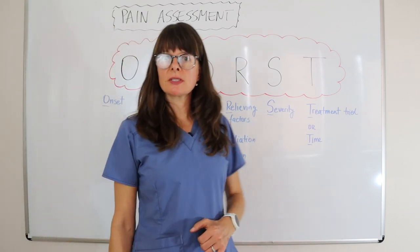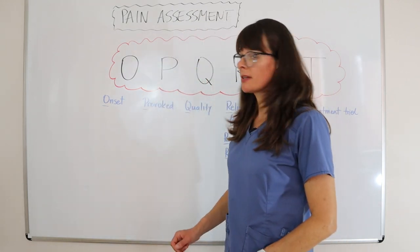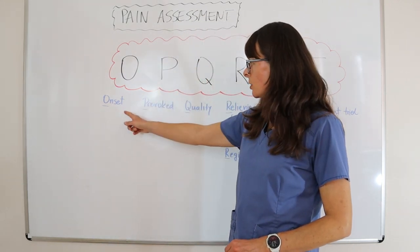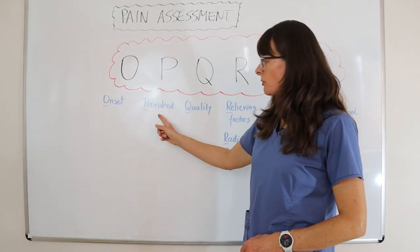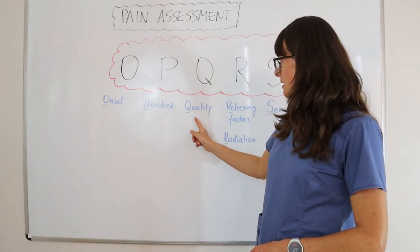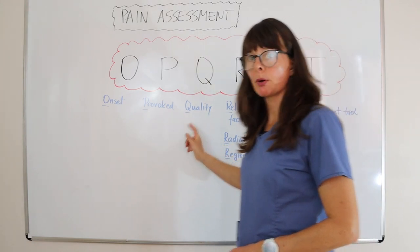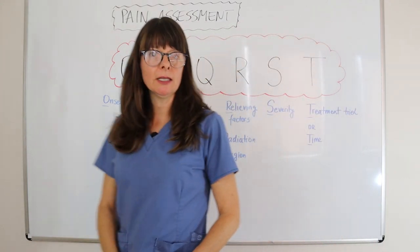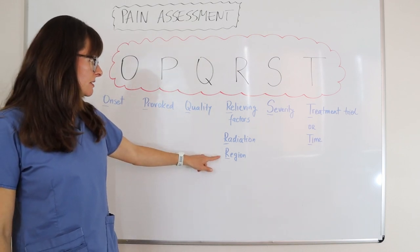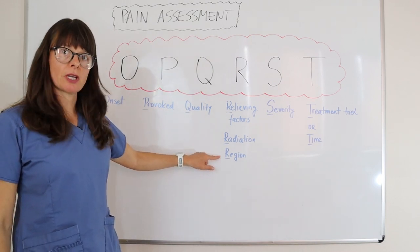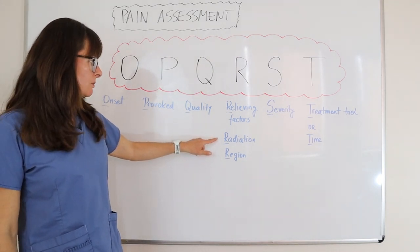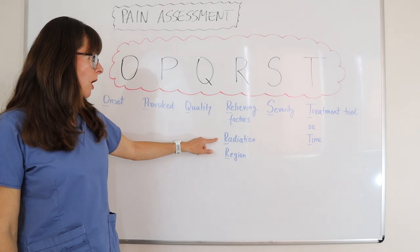Here is the example. The patient says the pain started two days ago. It was provoked by eating spicy food. It is a burning pain and the region is the epigastric area. It also radiates to the left upper quadrant.